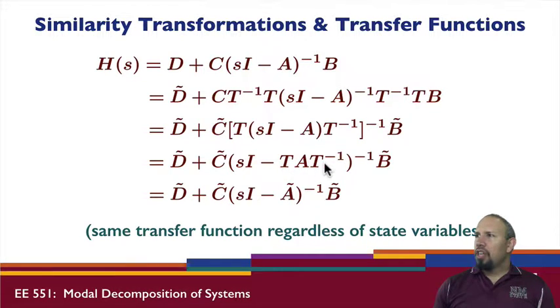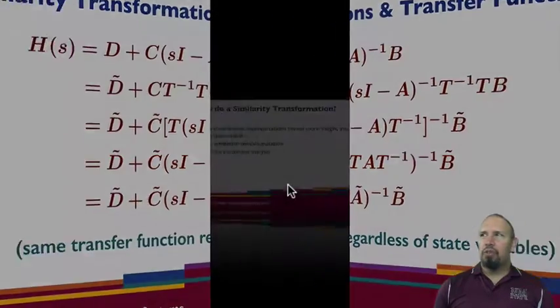But T, A, T inverse - notice the T and T inverse do not cancel because matrices do not commute in general. We have to leave them in this form. Even though it looks like they should cancel, they don't because matrices do not commute. They're on the wrong sides of each other. We end up with this matrix A tilde, and we have the same transfer function.